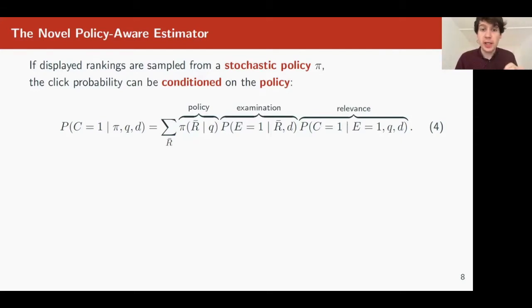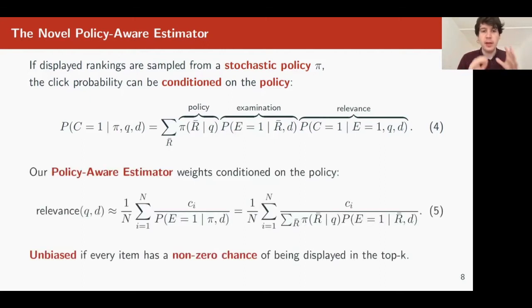So this is a generalization of the previous model that now takes into account the effect of the policy. It's a very simple extension. If the policy is deterministic, we'll have the same probability as we had before. The estimator now weighs according to the examination probability, conditioned on the policy, not on the individual ranking. This basically means that the denominator is a summation of all the rankings that the policy could display, and the probability of examination in those rankings.